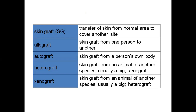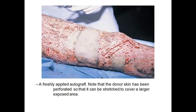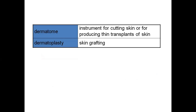Skin grafting is the transfer of skin from a normal area to an affected area. Types of skin graft: allograft is taking skin from another person; autograft is taking skin from the same person — for example, if burns are in the chest region, skin is taken from the thigh and placed on the chest; heterograft and xenograft are the same — taking skin from another animal, usually a pig. The dermatome is the instrument used to cut skin for transplantation.